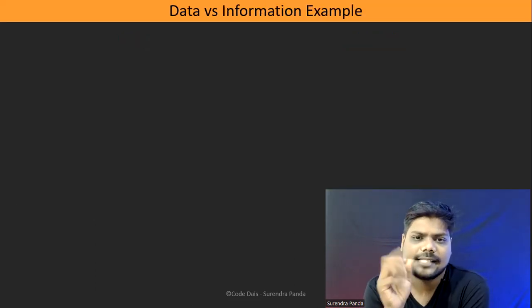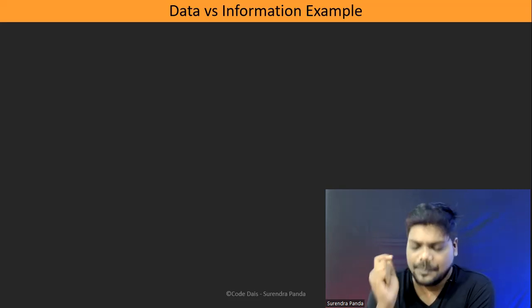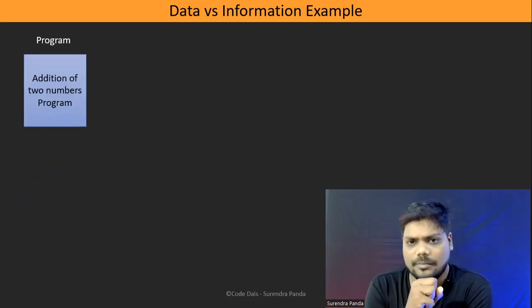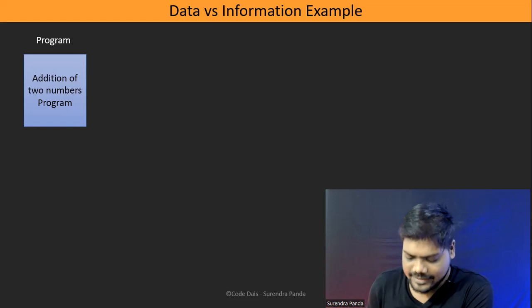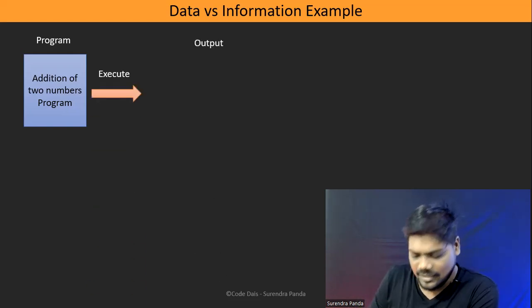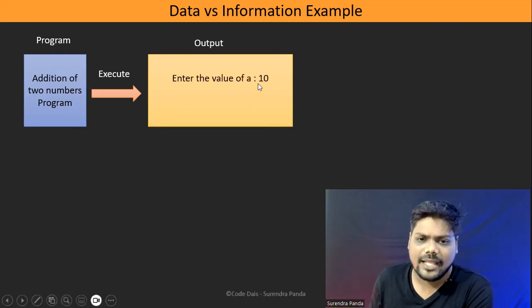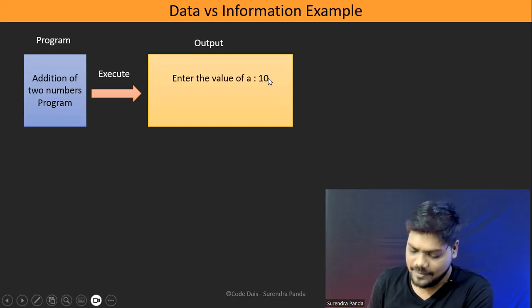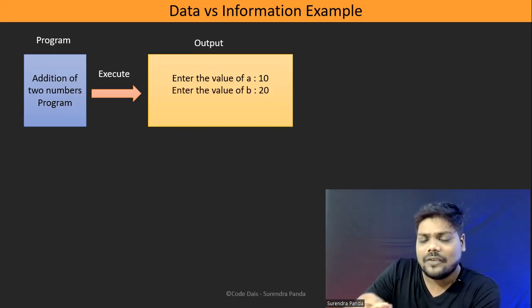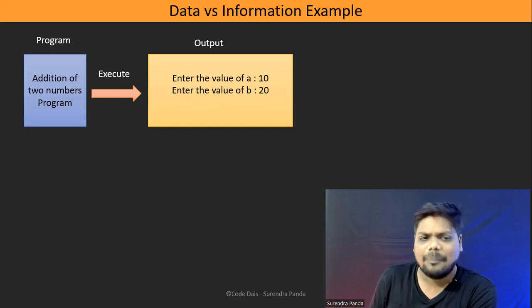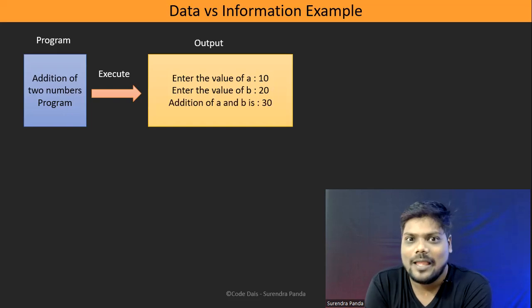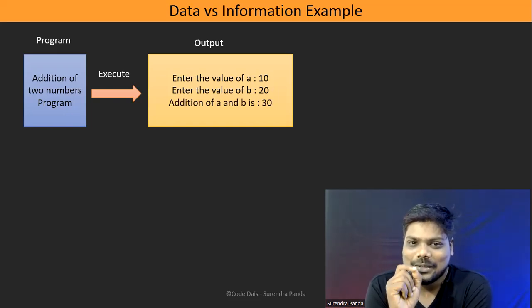Let me give a programmatic example so that you get more clarity. Suppose I write a program for addition of two numbers. Once the program is ready, I execute it. It asks me to enter the value of A — I enter 10. Then it asks me to enter the value of B — I enter 20. After processing, it gives the result: addition of A and B is 30.